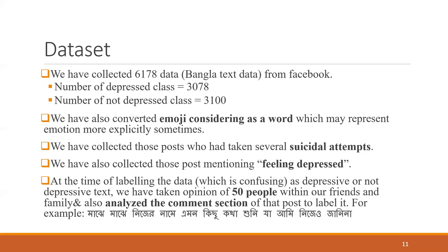In our work, we collected a dataset of 6,178 data points: 3,178 depressive and 3,100 non-depressive. We considered emojis as words. During data collection, we gathered posts from people who committed suicide and also posts tagged with 'feeling depressed.' When we were uncertain whether a post was depressive, we took the opinion of 50 friends and family members and analyzed the conversation of that post to label it.